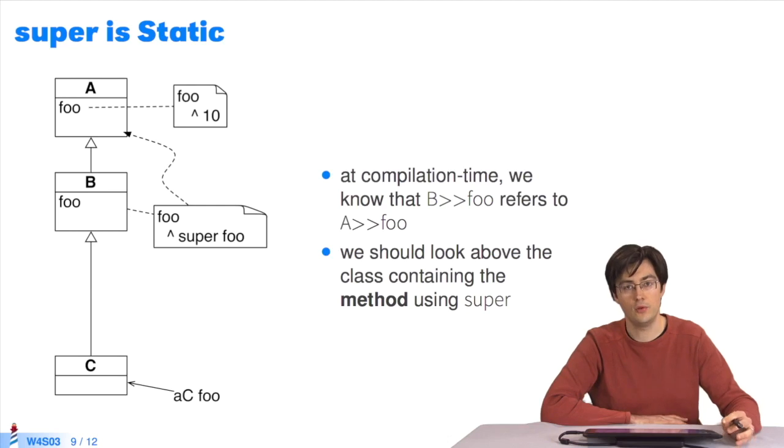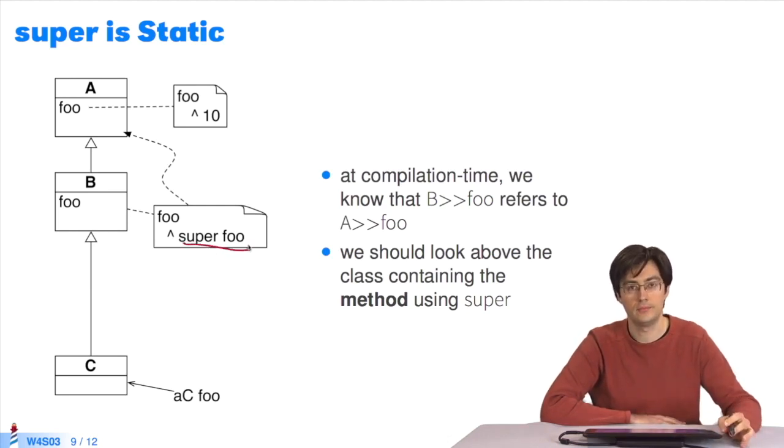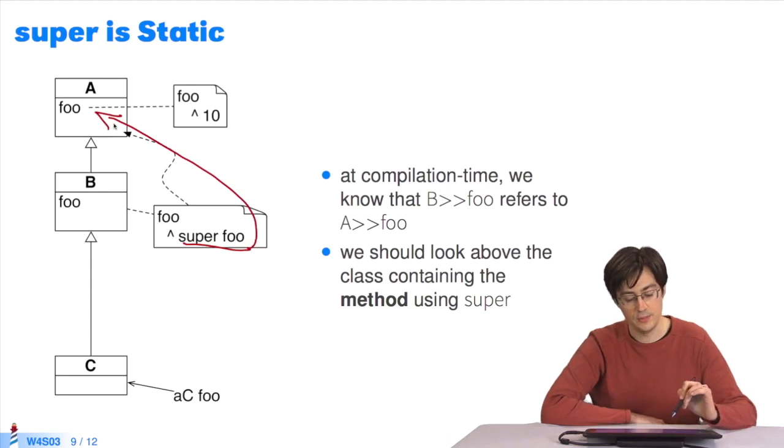Conversely, super is static. When the developer writes super foo, he knows which foo method will be executed when the program is run. When he writes super foo here, he knows he is referring to foo in super class A. Invariably, super is static. We know how the program will be compiled.